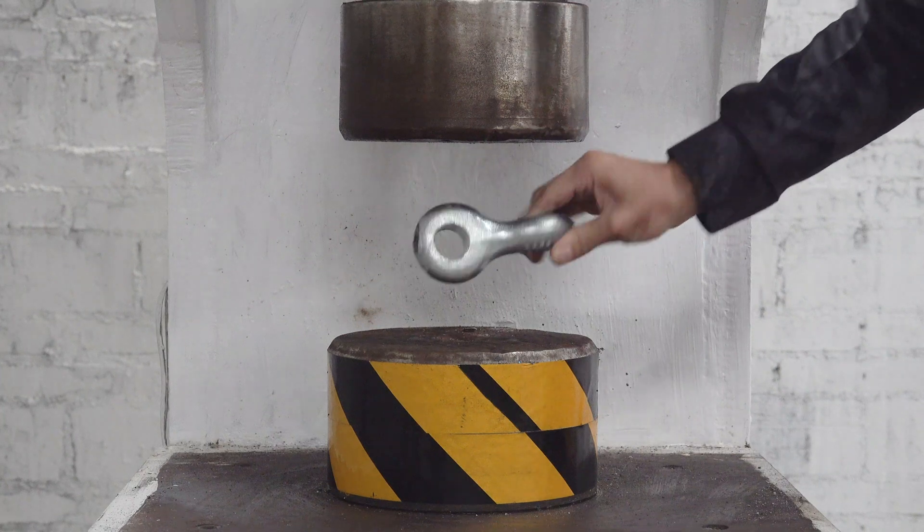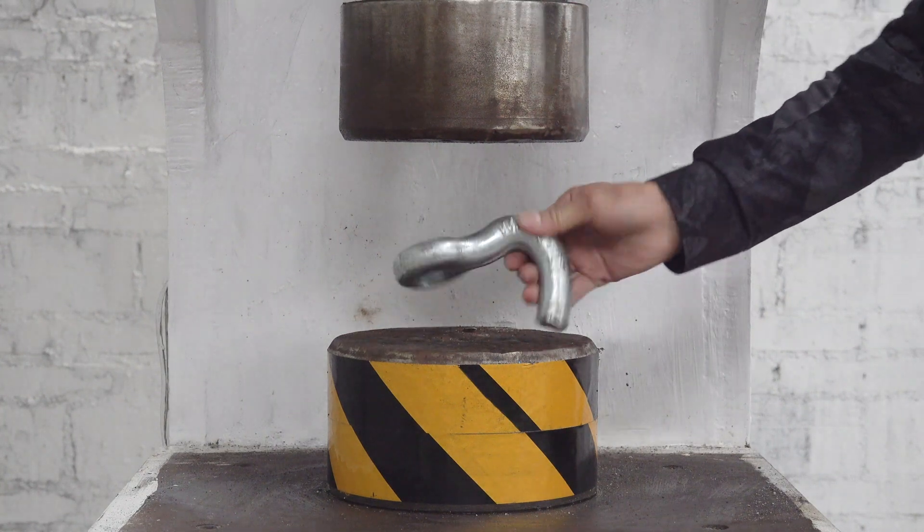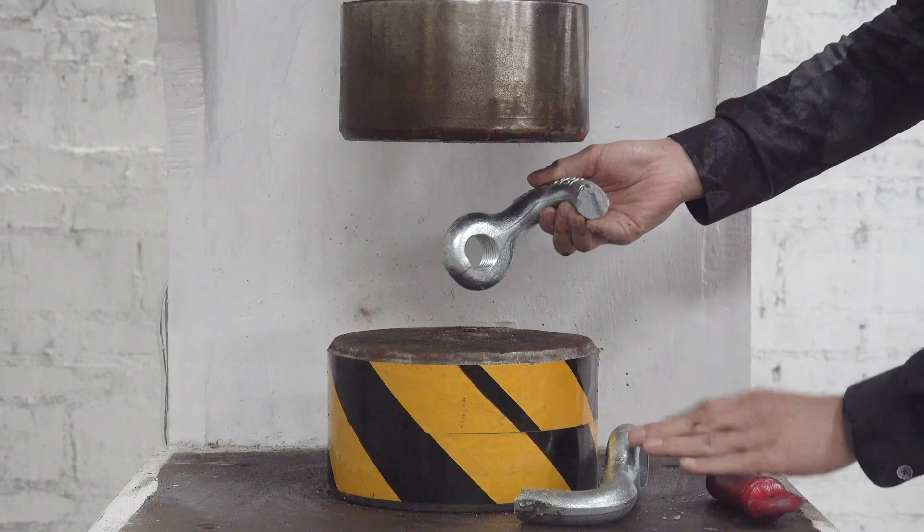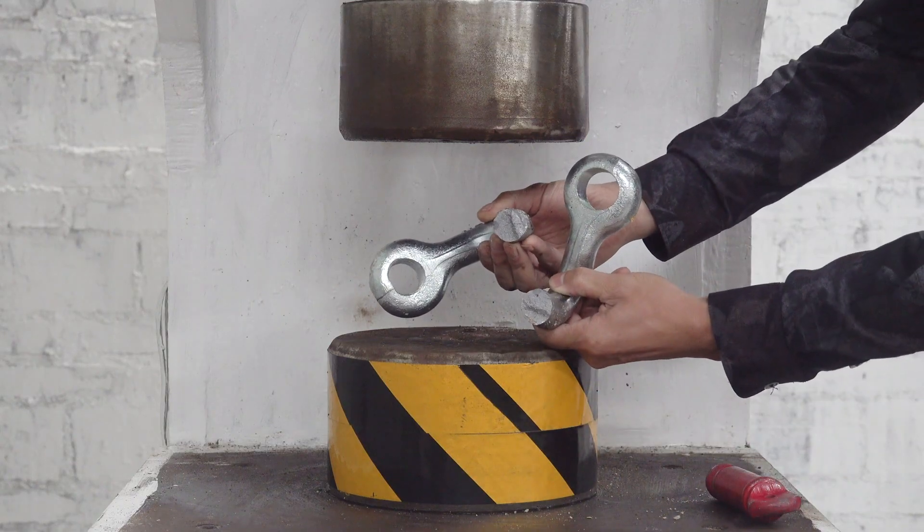The test experiment tells us that the poly steel hook with a load of more than 50 tons goes down under the pressure of the hydraulic press.